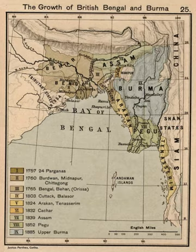As early as 1868, British administrators saw the need for an independent administration in the eastern portion of the Bengal Presidency. They felt that Fort William in Calcutta, the capital of British India, was already overburdened. By 1903, it dawned on the colonial government the necessity of partitioning Bengal and creating prospects for Assam's commercial expansion.